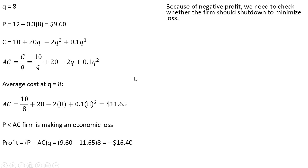Because of the negative profit, we need to check whether the firm should shut down to minimize losses. It might be in the firm's best interest to produce nothing instead of producing 8. The shutdown rule is if the price is less than the average variable cost, the firm should shut down, which is equivalent to saying if total revenue is less than variable cost, the firm should shut down.